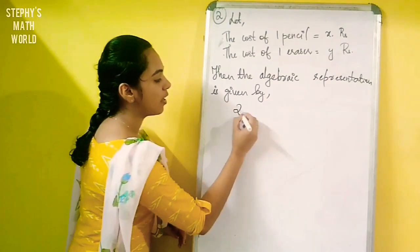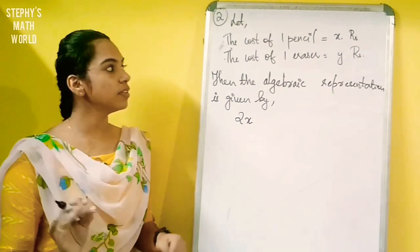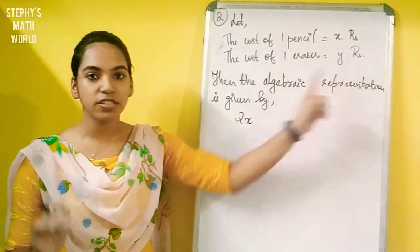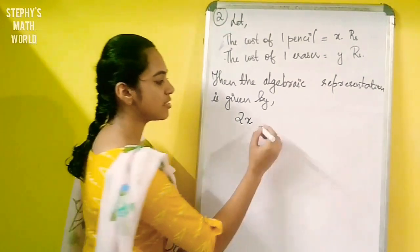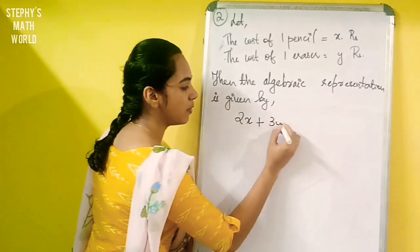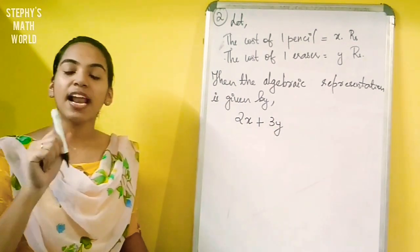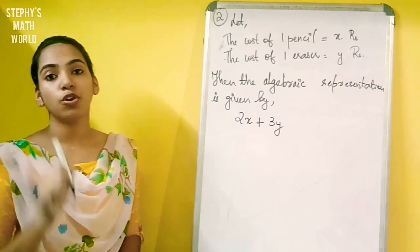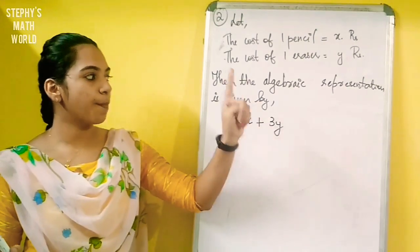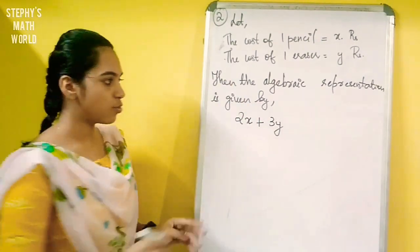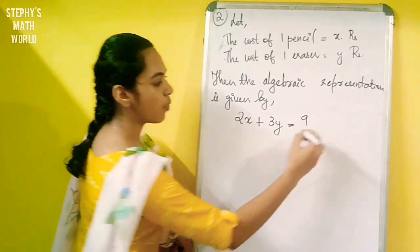2x represents the cost of two pencils. How many erasers do you have? 3. So 3y. This gives us 3y. The total is equal to 9. This is equation 1: 2x plus 3y is equal to 9.